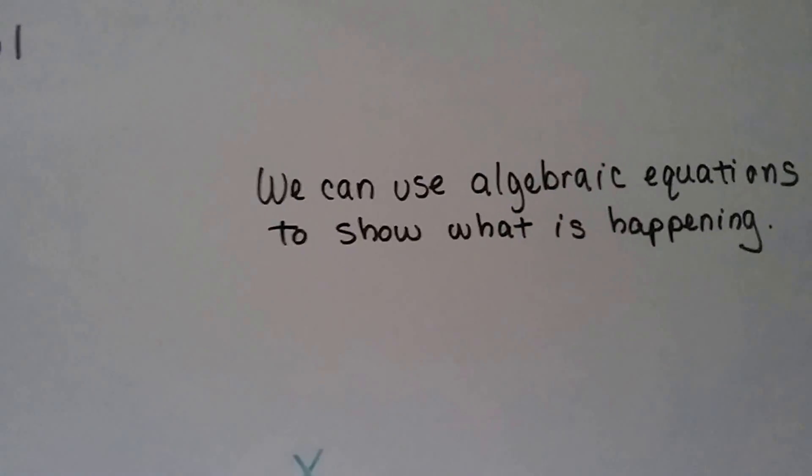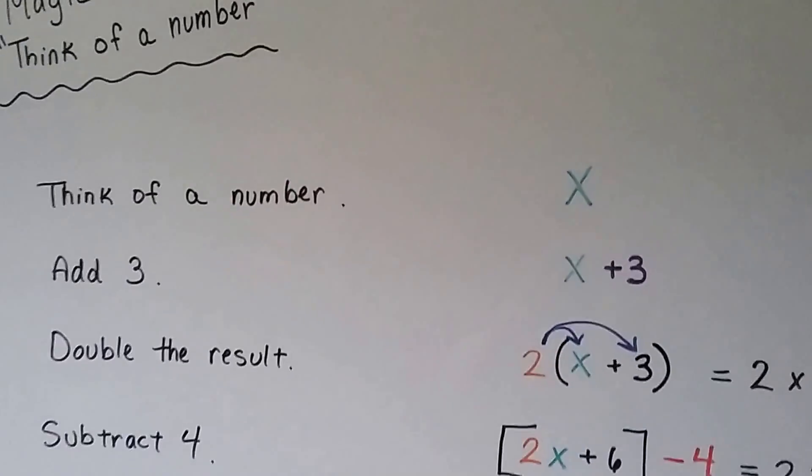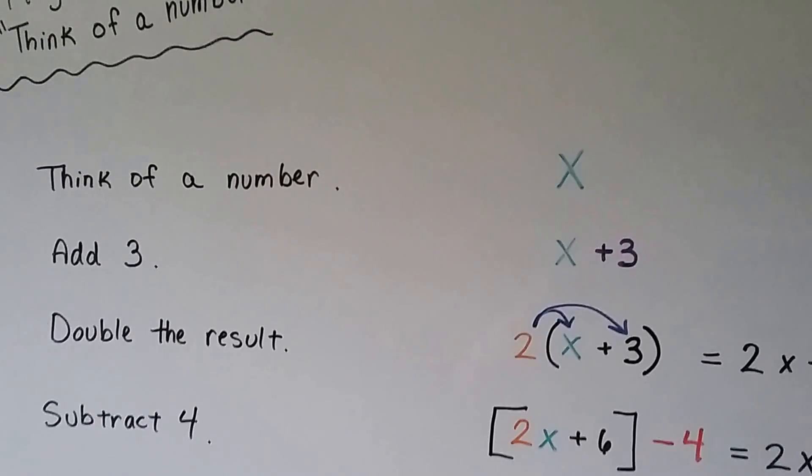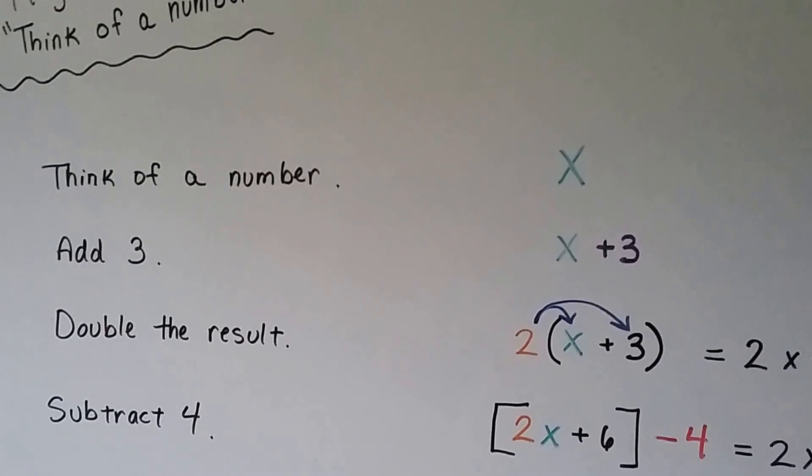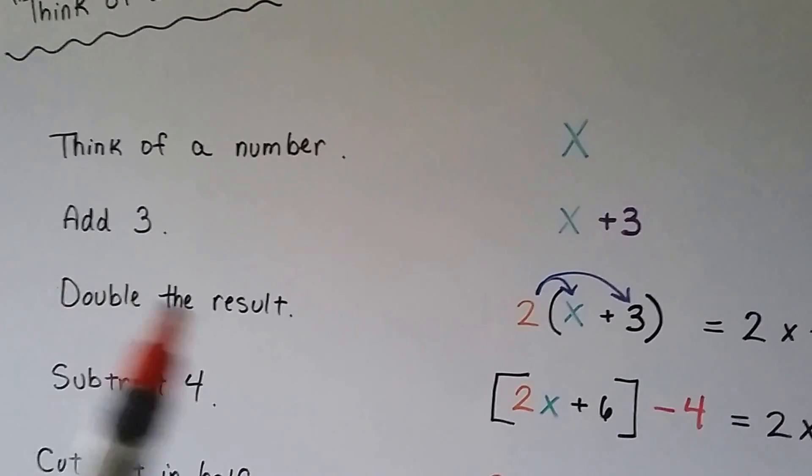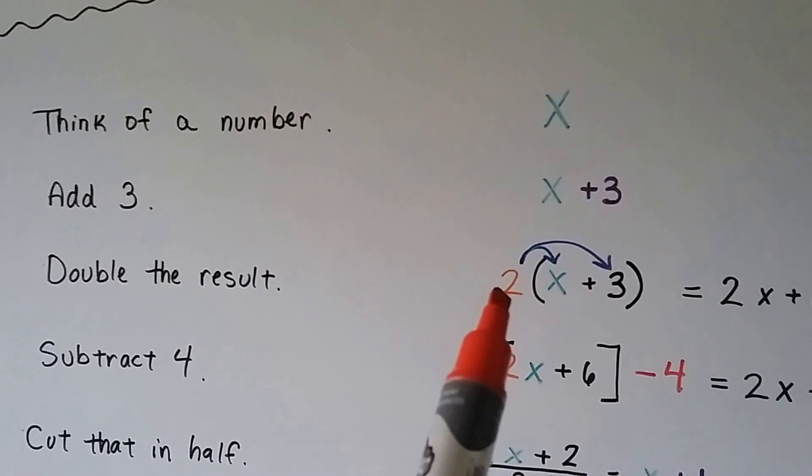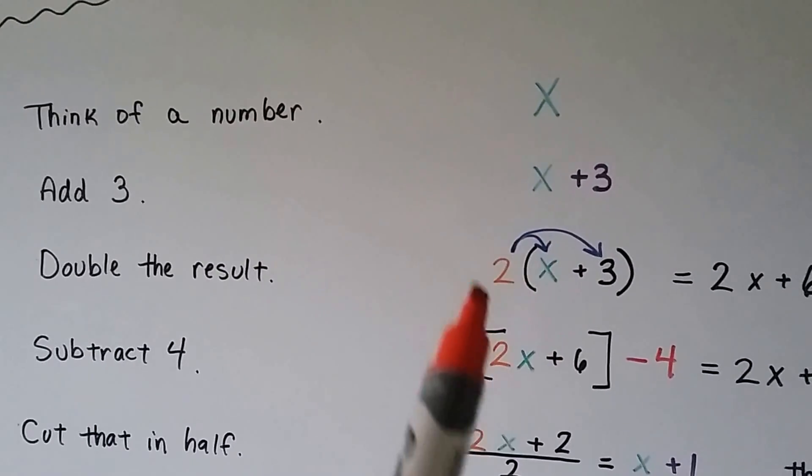Well, I'll tell you. We can use algebraic equations to show what's happening. It says to think of a number. Now we don't know what the number is so we're just gonna assign a variable x. It says to add three so we have x plus three. It says double the result so we're gonna multiply x plus three times two. We use distributive property we get 2x plus six.